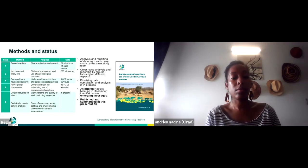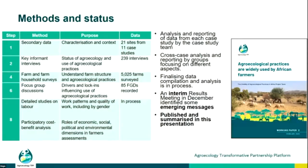Step four involved a series of focus group discussions — 85 in the common database framework — particularly looking at drivers and lock-ins of agroecological practice use. Step five involved more detailed studies on work and labor, using a participatory cost-benefit analysis to get a handle on the multiple factors and trade-offs people are weighing when deciding whether or not to use agroecological practices.